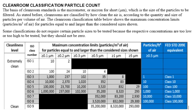Clean room classification particle count. The basis of clean room standards is the micrometer, or micron for short, which is the size of the particles to be filtered. Clean rooms are classified by how clean the air is, according to the quantity and size of particles per volume of air. The clean room classification table below shows the maximum concentration limits — particles per m³ of air — for particles equal to and larger than the considered sizes shown.